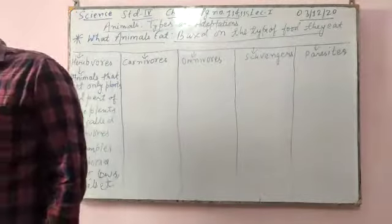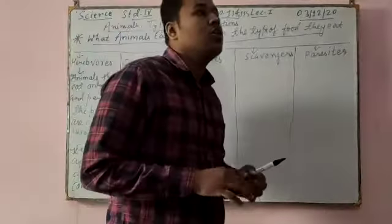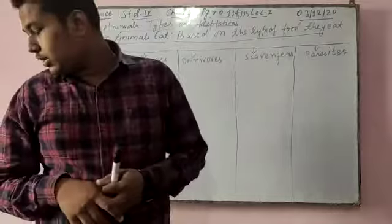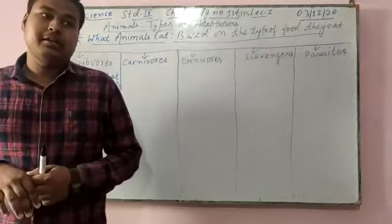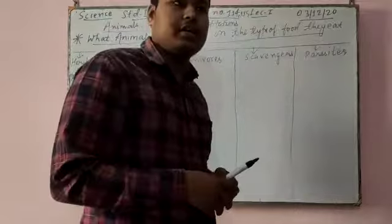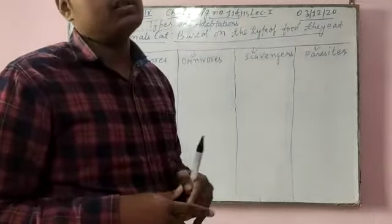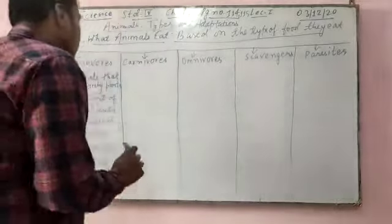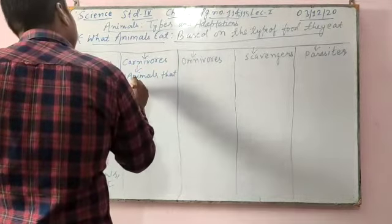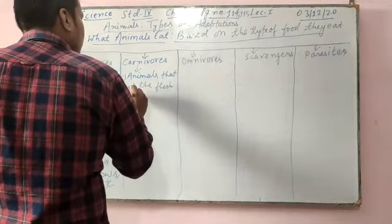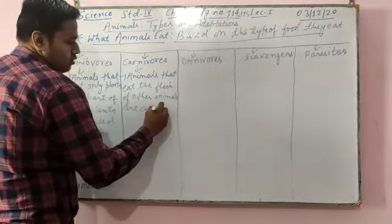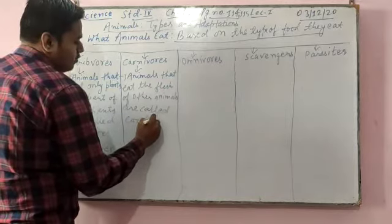Next is carnivores. Animals that eat only the flesh of other animals are carnivores. In this category, the animals hunt, kill, and eat. Animals who hunt are called predators, and animals who are hunted by other animals are called prey. For example, if a lion or tiger hunts a deer, then the lion and tiger are predators and the deer is prey. Animals that eat the flesh of other animals are called carnivores.